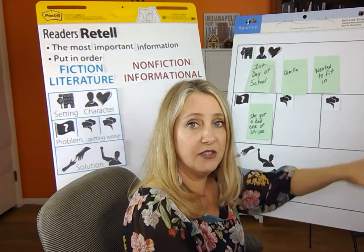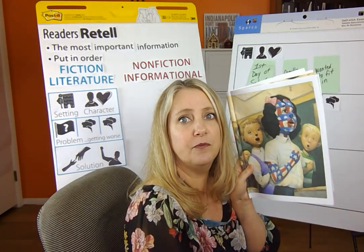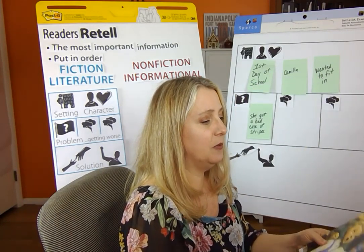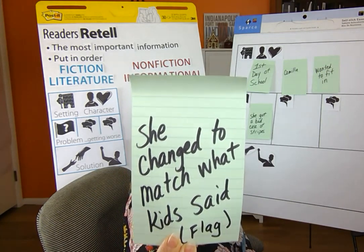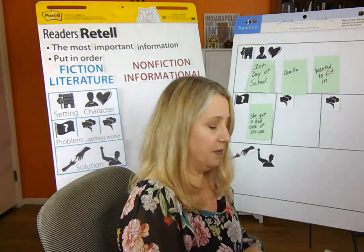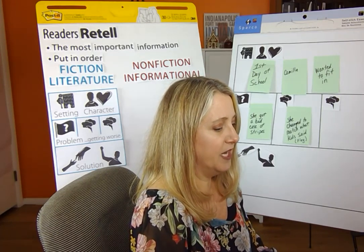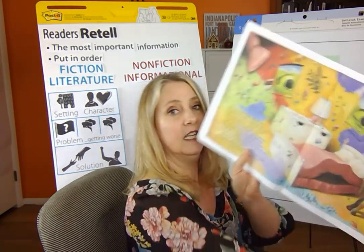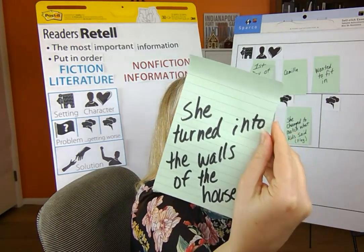So I just wrote 'she got a bad case of stripes' — just a few words, not a whole sentence. In second and third grade we write several words; I call that a phrase. Then did it get worse? Yes — she went to school, she turned into the stripes like the flag and stars and stripes, and when somebody would say something like 'checkerboard,' poof, she would turn into that. So I wrote 'she changed to match what kids said' and wrote 'flag' to help me remember she looked a lot like the flag.